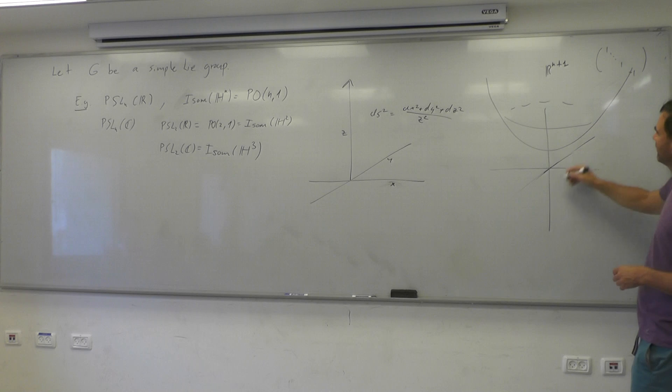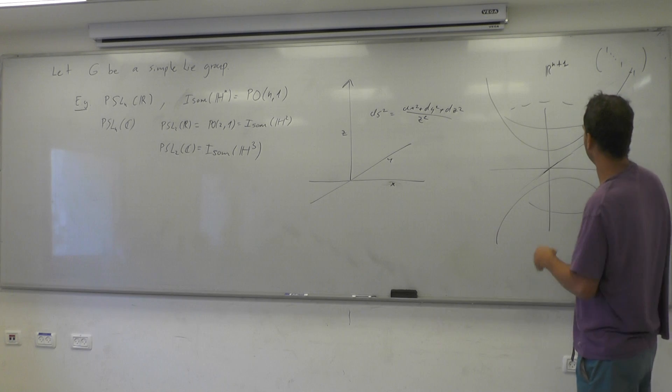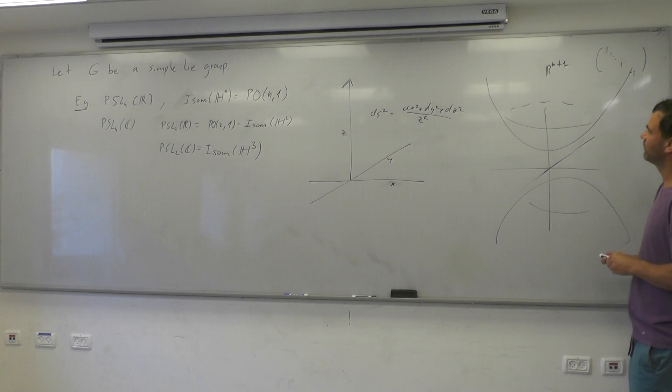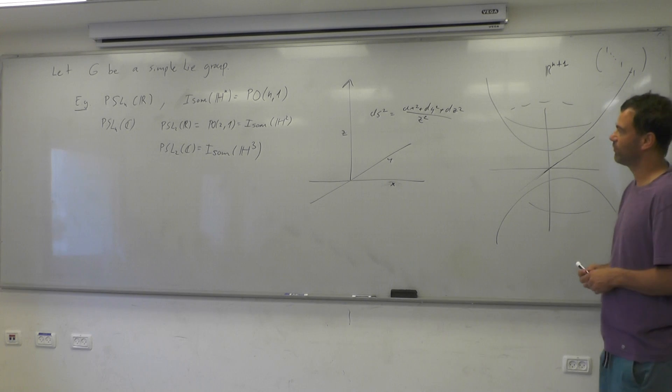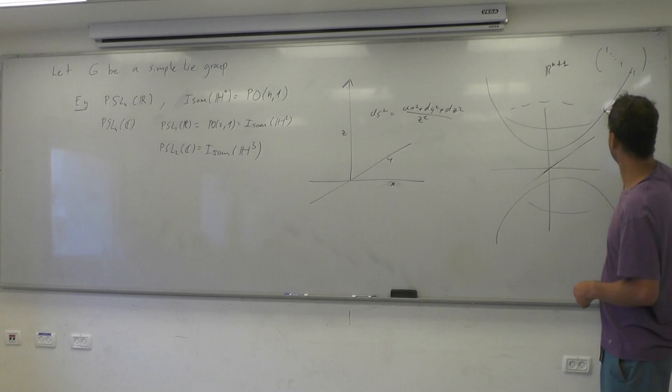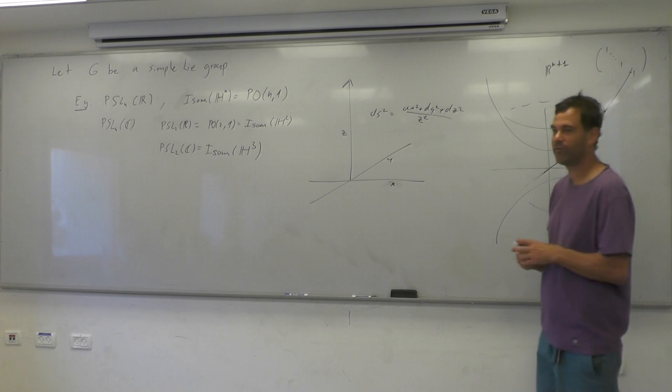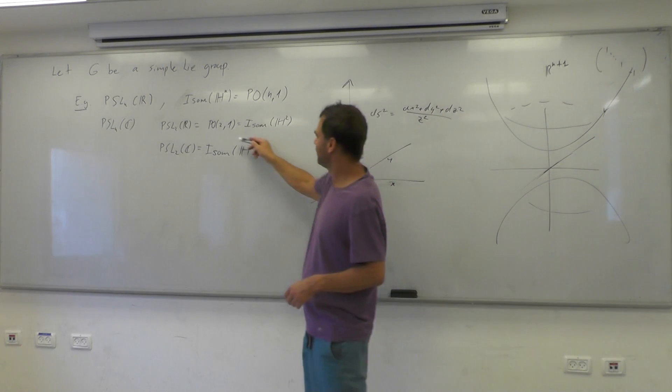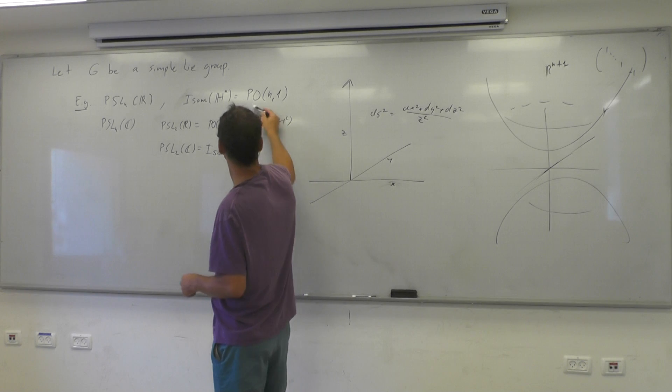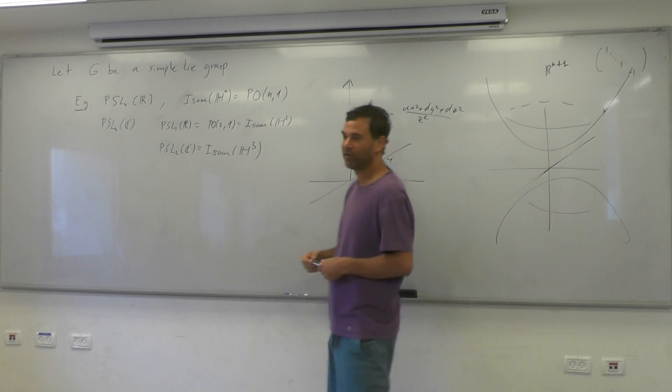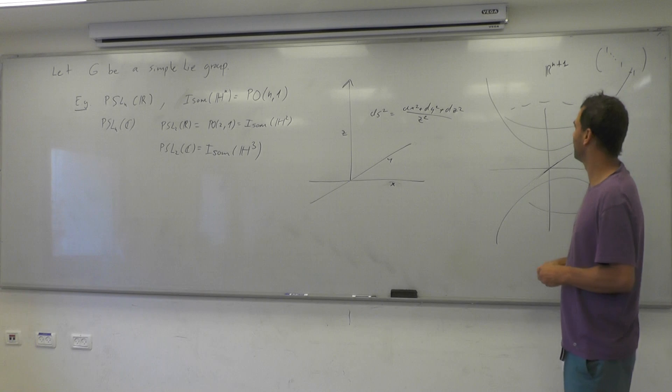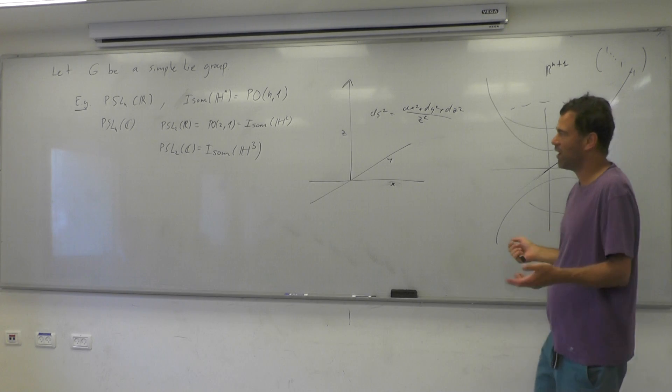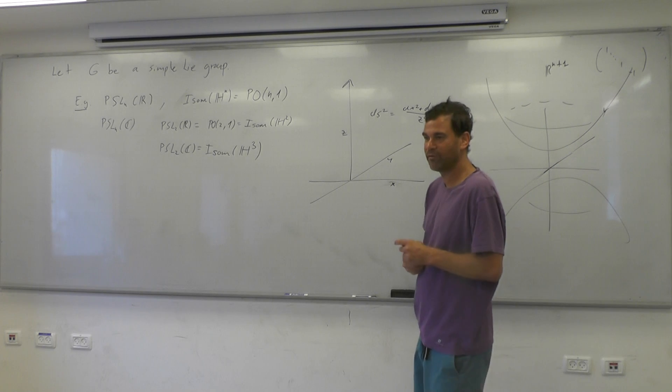And then, if you restrict the form to this, or to the connected half of it, then it becomes positive definite on the tangent space at any point. And you can compute the curvature is minus one, and this is actually another model for the hyperbolic space. There is some hint that the isometry group is, with this notation, the matrices that preserve this form.